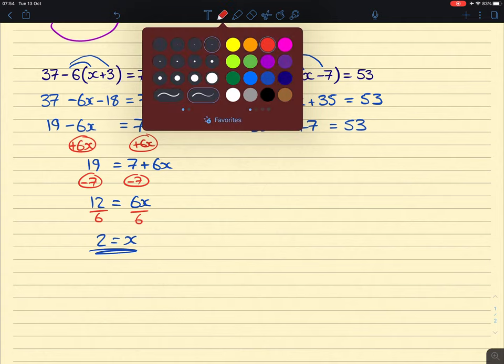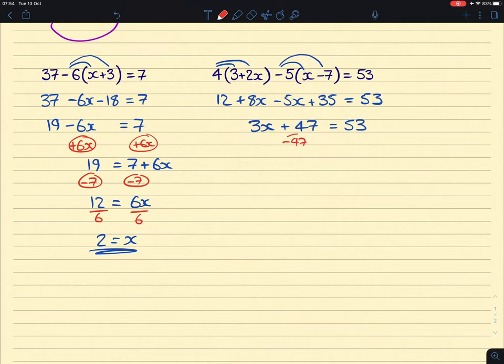Then I'm going to take away 47 from both sides. We'll end up with 3x equals 6. And then we're going to divide both sides by 3, giving us x equals 2.